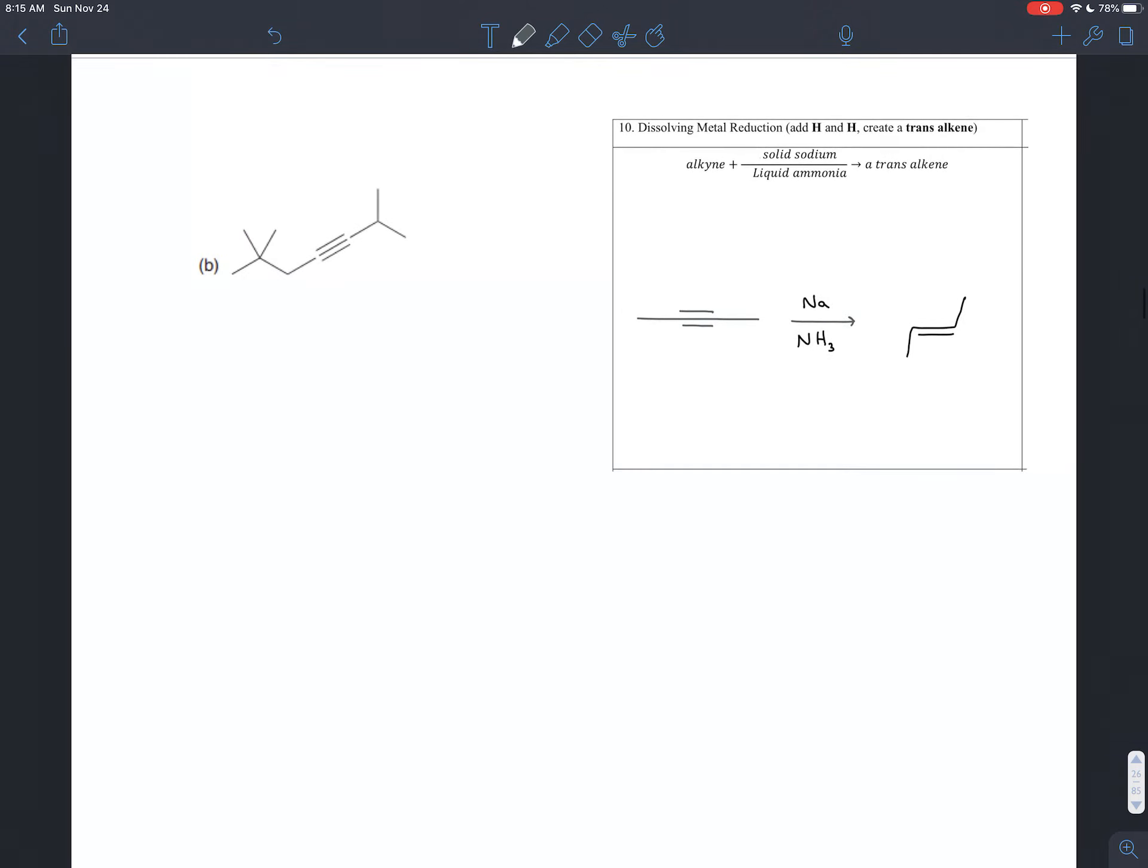All right, let's try it with this one. Same sort of procedure. Let's try just drawing the triple bond as a double bond first. And then let's think a little carefully about what's going to be coming off of that. Now we know we're treating this with sodium and liquid ammonia, so we're going to be getting a trans alkene. So whatever else happens, we know that one branch has to be going up, the other has to be going down.